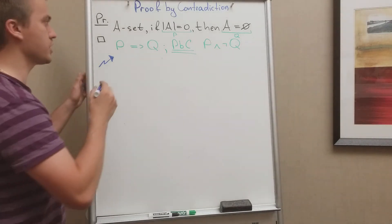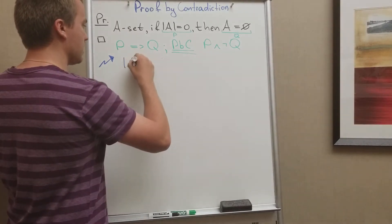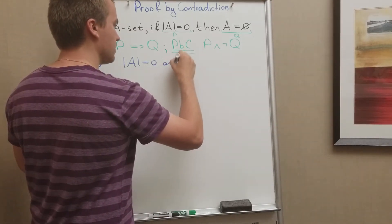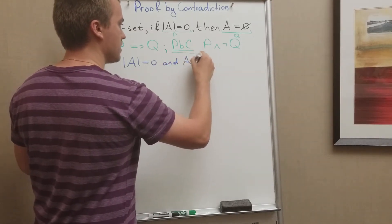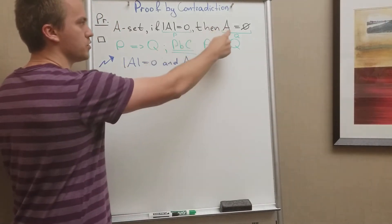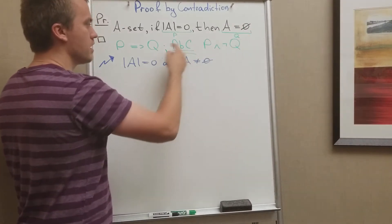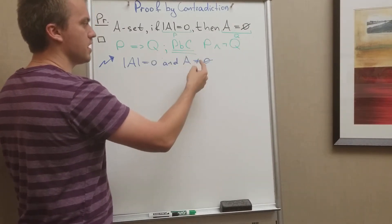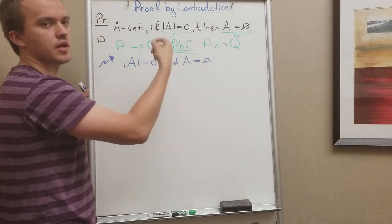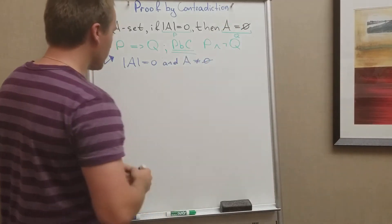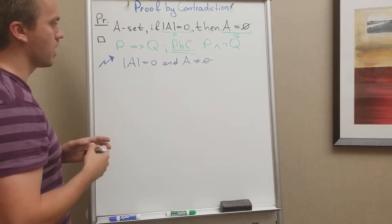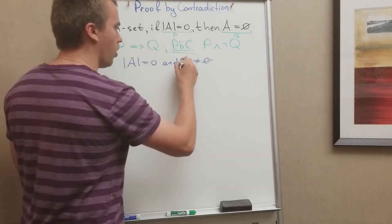By proof by contradiction, I'm going to assume that the cardinality of A equals zero and that set A is not empty. It's not empty because we're negating Q — Q says the set is empty, so the negation means the set is not empty. This is our first step in proof by contradiction.